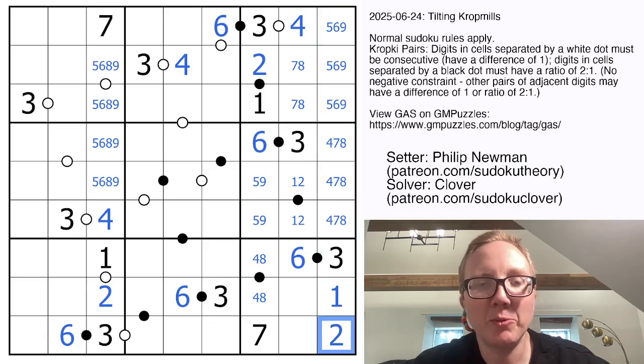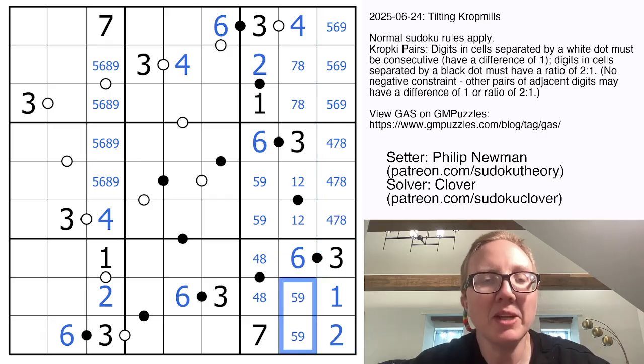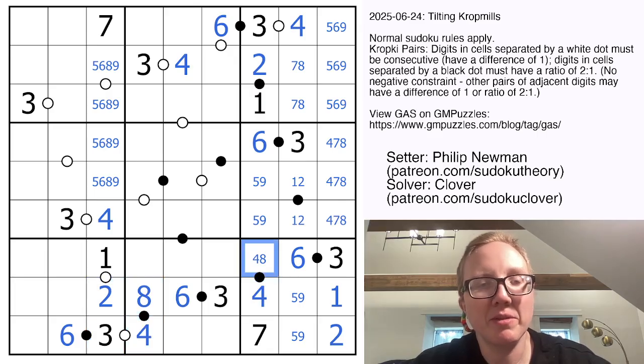Those digits in the column have to be 1 and 2, and these are going to be 5 and 9. Now that we have a 2 here, this 3 can't go next to 2, so that must be a 4, making that an 8, and that resolves this 4, 8 pair.